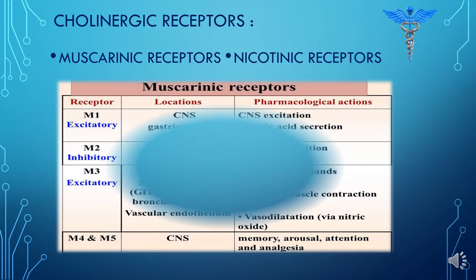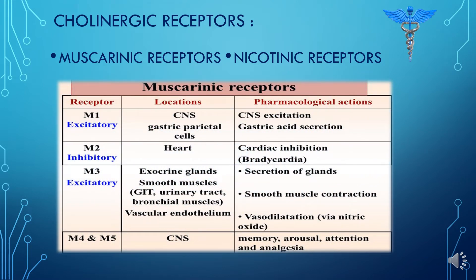Here you can see in this figure the five classes of muscarinic receptors. If acetylcholine binds with the M1 receptor, which is present in the central nervous system and gastric parietal cell, it will excite the central nervous system and stimulate gastric secretion.